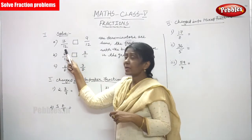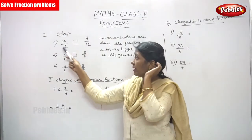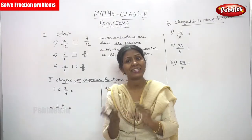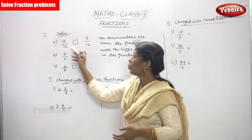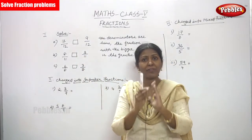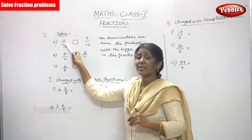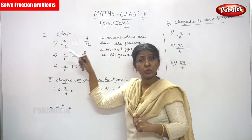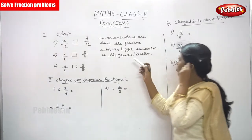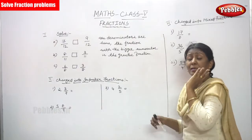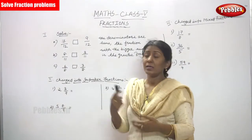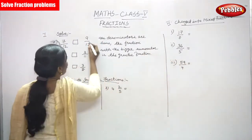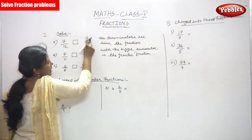Let me repeat once again. 7 by 12 is one fraction and 9 by 12 is another fraction. If the denominators are the same, you only need to check the numerator — which is greater. The first fraction's numerator is 7 and the second fraction's numerator is 9. The fraction with the bigger numerator is the greater fraction, so 9 by 12 is the greater fraction.